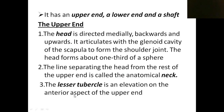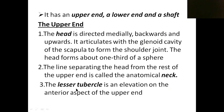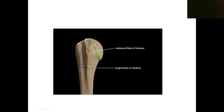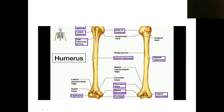The upper end has two tubercles. The lesser tubercle is a small elevation on the anterior aspect of the upper end. The greater tubercle is a larger elevation. These two tubercles are separated by a groove known as the intertubercular sulcus, or bicipital groove.